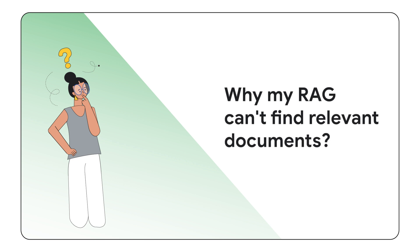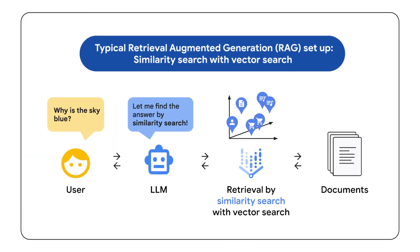However, many RAG engineers are struggling to build production quality retrieval engines. The search quality of RAG systems is becoming a major challenge. This often happens when using basic text embeddings with vector databases for simple similarity searches — a common issue in information retrieval system design, one that Google has been addressing in its search services for over a decade.